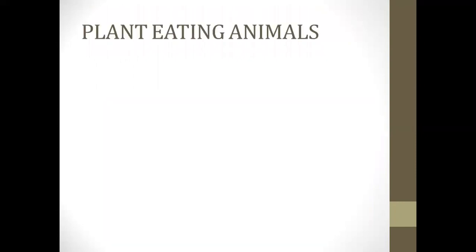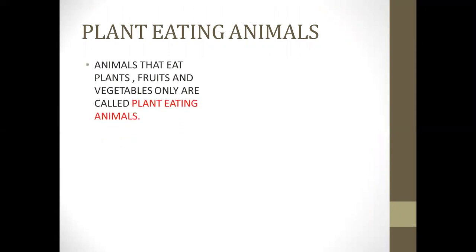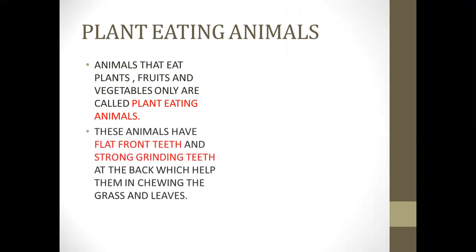Now the first group which we are going to discuss is plant eating animals. Animals that eat plants, fruits and vegetables only are called plant eating animals. That means even if a plant eating animal doesn't get any plant or fruit or vegetable, it will never eat the flesh of other animals.